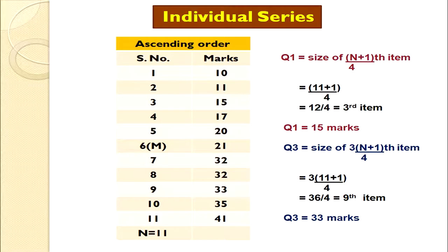We estimate Q1 with the formula: Q1 = size of (n+1)/4th item. Here n = 11, so (11+1)/4 = 3rd item. The 3rd item in the arranged data is 15, so Q1 = 15 marks. For Q3, we use size of 3(n+1)/4th item. With n = 11, that gives the 9th item, which is 33. So Q3 = 33 marks. We have learned how to calculate quartiles in individual series.